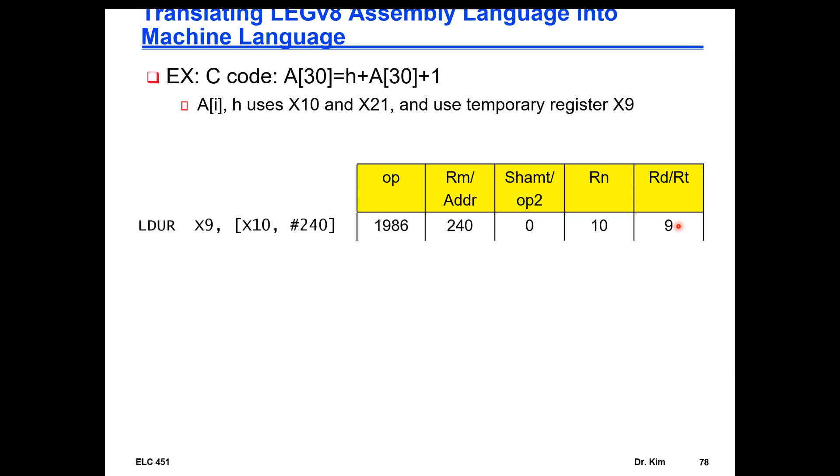Then we said that H wasn't registered 21, so here we're just adding 9, which is really A[30], to H, and we're going to overwrite register 9 with the result. So that would be the opcode, so here we have first source, second source, and destination.